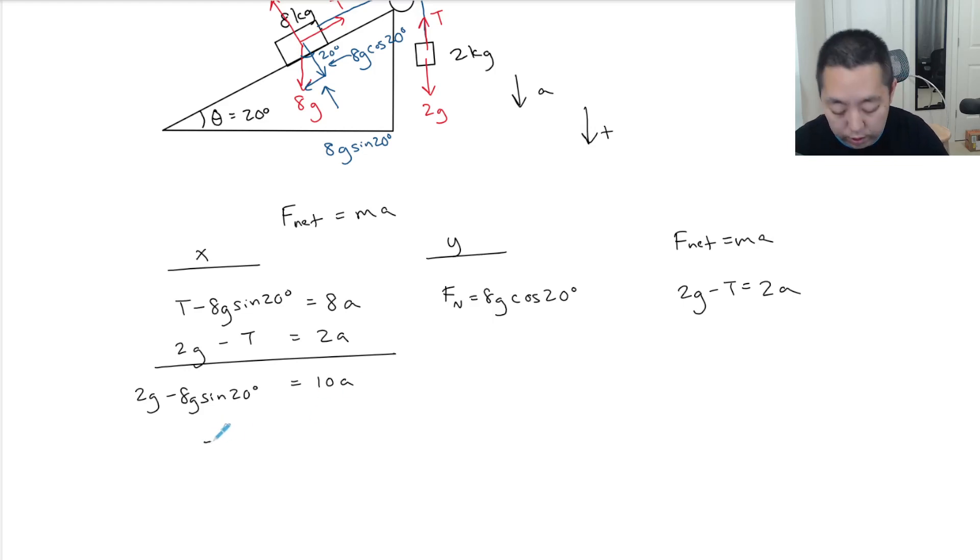I got this is negative 7.214 is equal to 10a, and then I can solve for a. It's negative 0.72 meters per second squared.